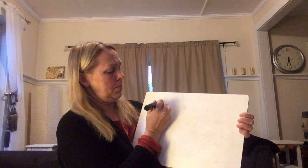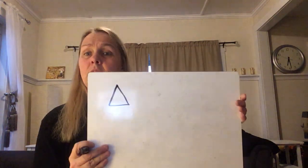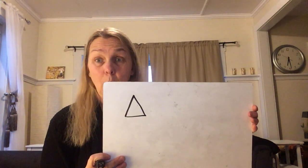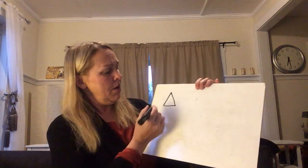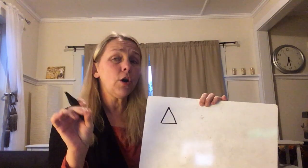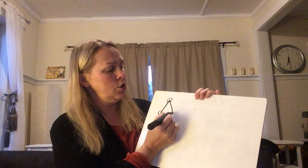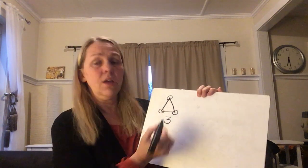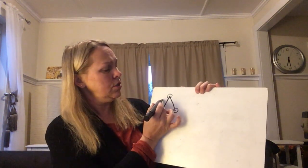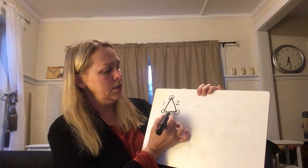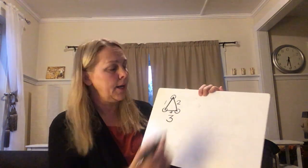What shape is this? I hope you all said triangle. How many vertices? Remember, vertices is the fancy way of saying corners. So there's one, two, three vertices, and how many sides on a triangle? One, two, three. You got it.